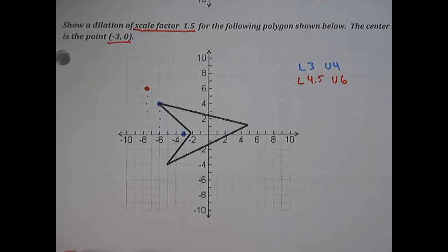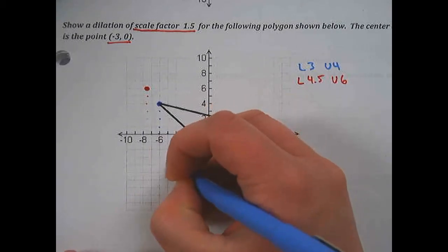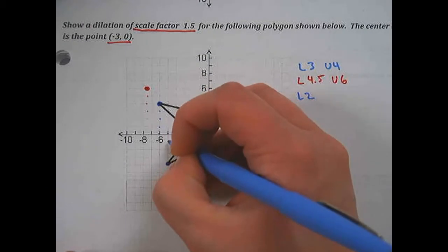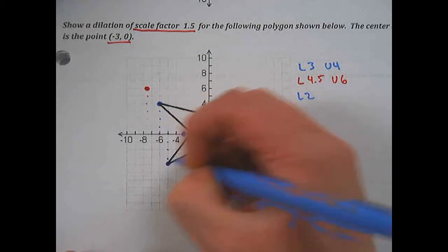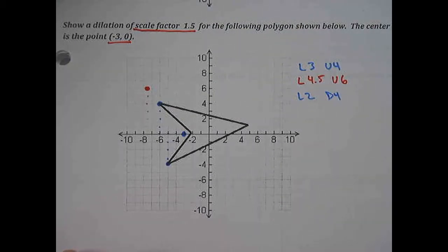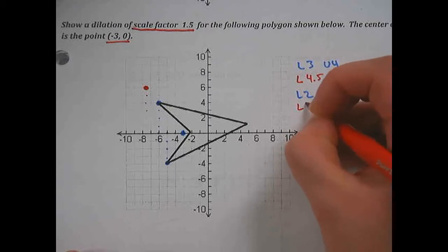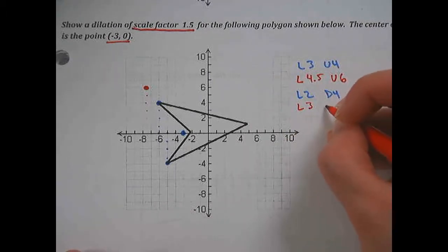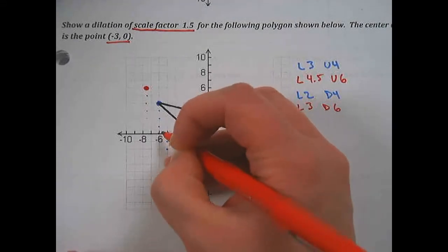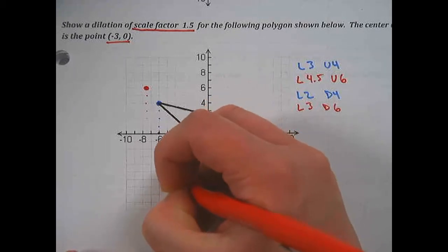Now we'll do the same thing with all my other points. To get to this one, go left 2 and down 1, 2, 3, 4. Multiply these instructions by 1.5: instead of left 2, go left 3, and instead of down 4, go down 6. So left 1, 2, 3, down 1, 2, 3, 4, 5, 6.